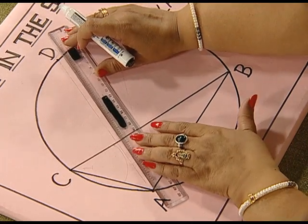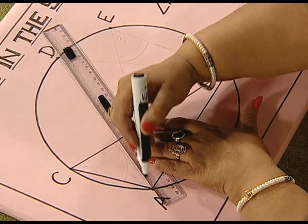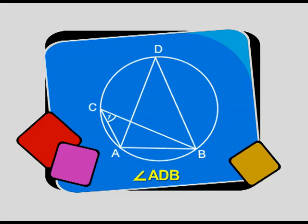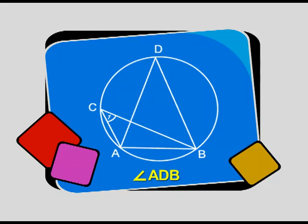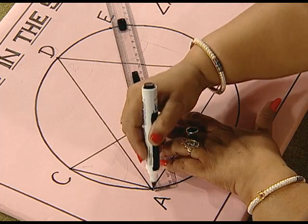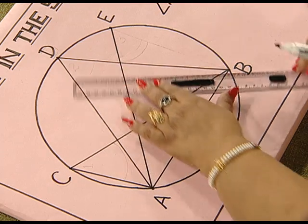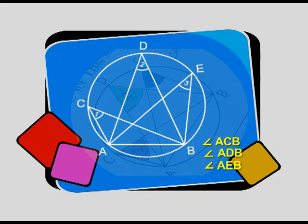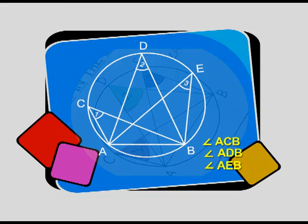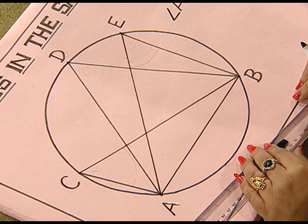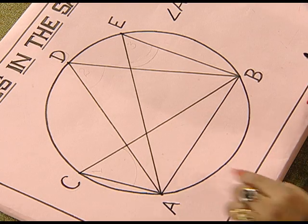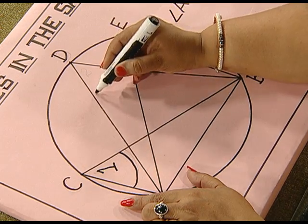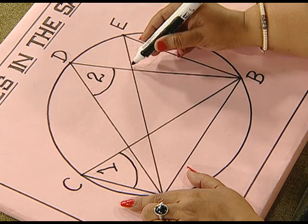Similarly, we join points A and D, and also D and B, to obtain angle ADB. We also join A and E, and E and B, to obtain angle AEB. What do you get? We get three angles in the same segment — this is angle 1, this is angle 2, and this is angle 3.